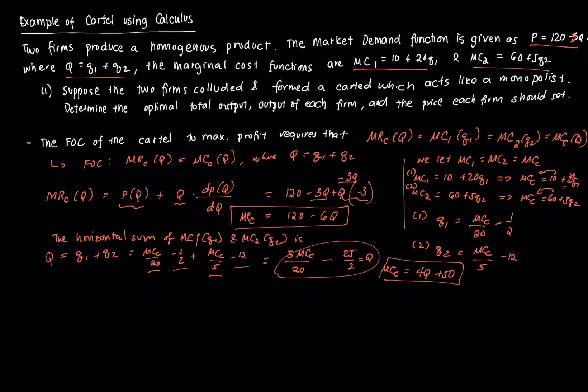We know that the FOC requires this condition. We're just going to do that. This is MRC equal to MCC. That's 120 minus 6Q equal to 4Q plus 50. Therefore, Q star is equal to, if I transpose this, this one becomes, that's going to be 10Q. Transpose that to the other side, that's going to be equal to 70. Then, divide both sides by 10. Q star is equal to 7. That's the optimal total output.